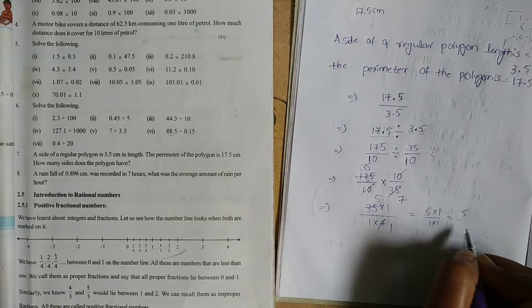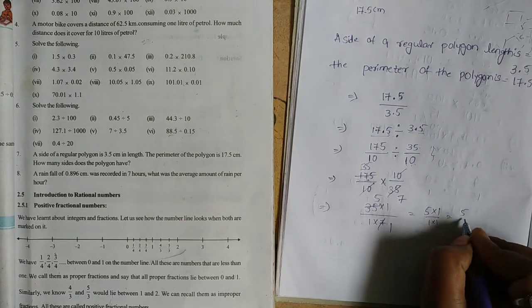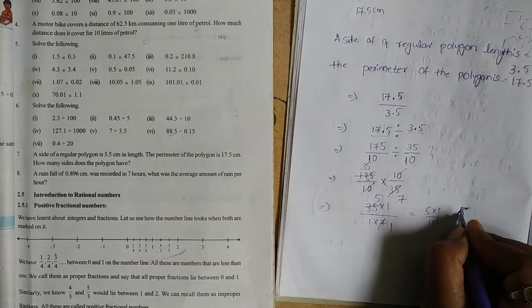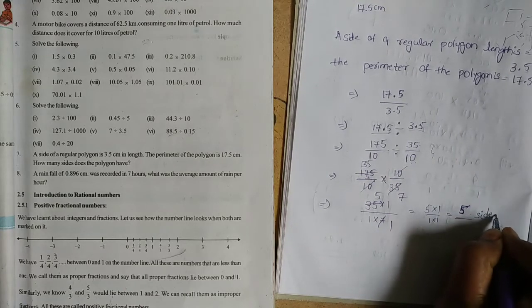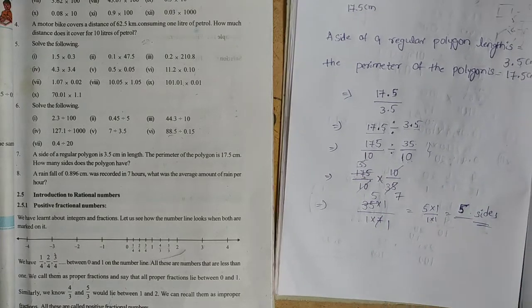It is equal to 5. Here we can cancel. 5 into 5. There are 5 sides. There are 5 sides.